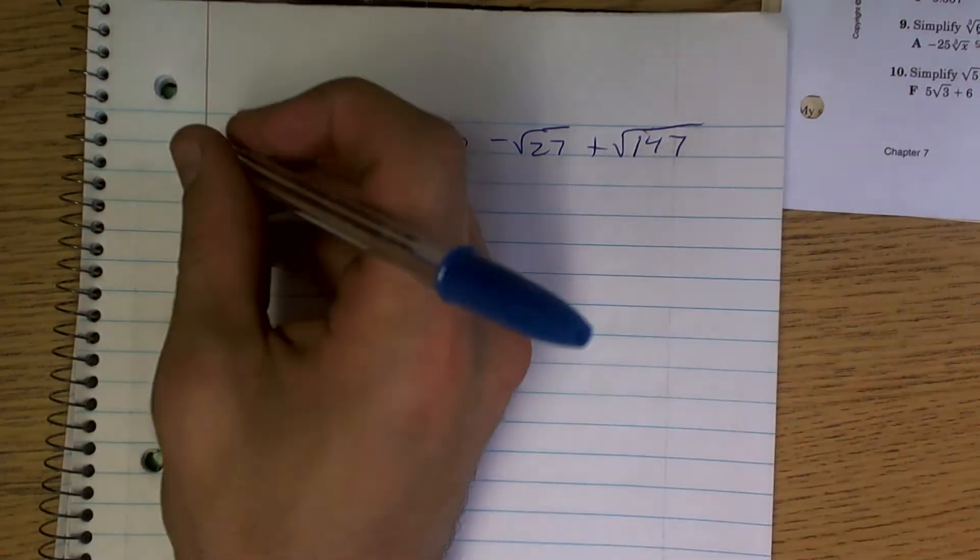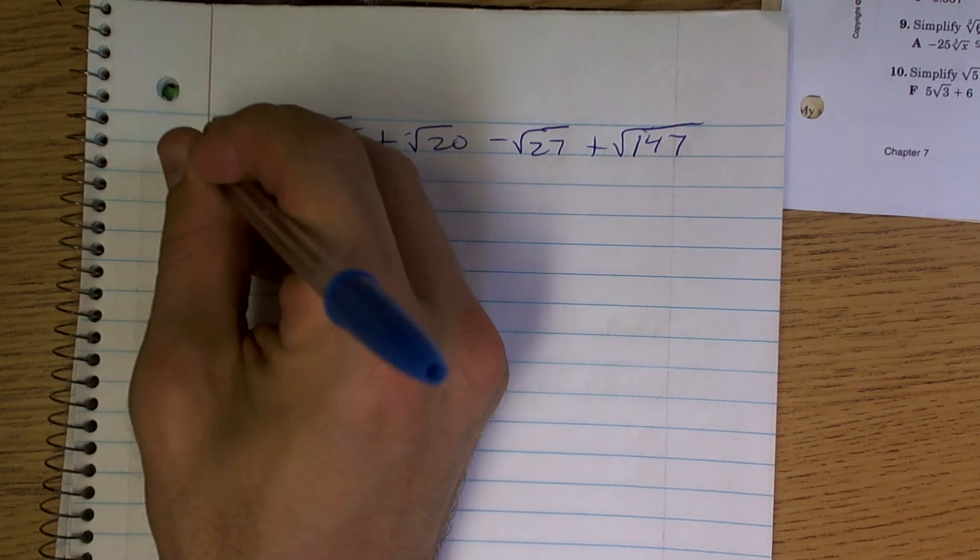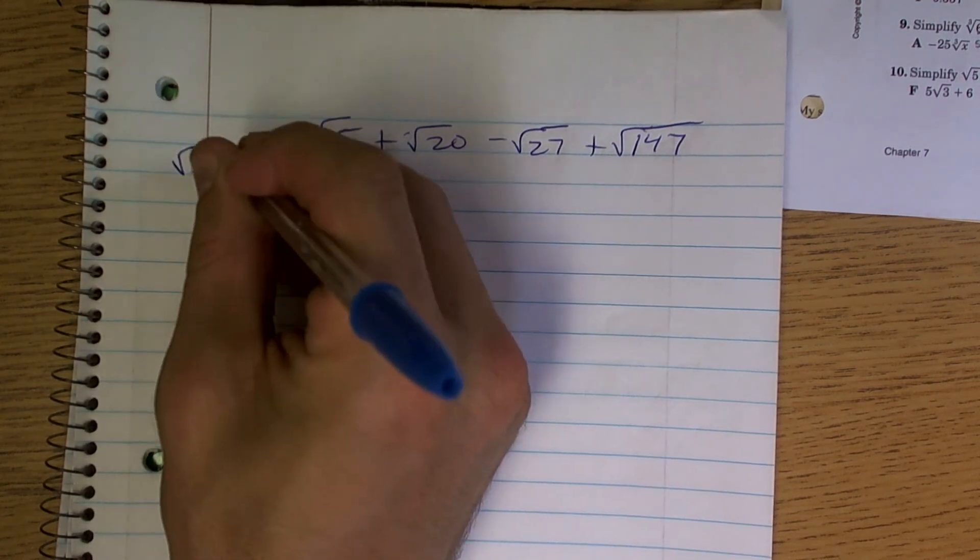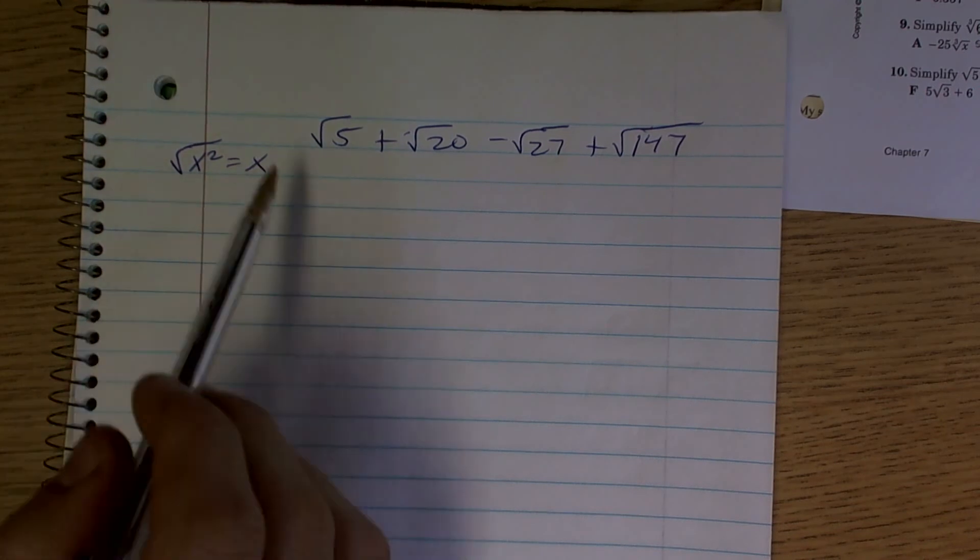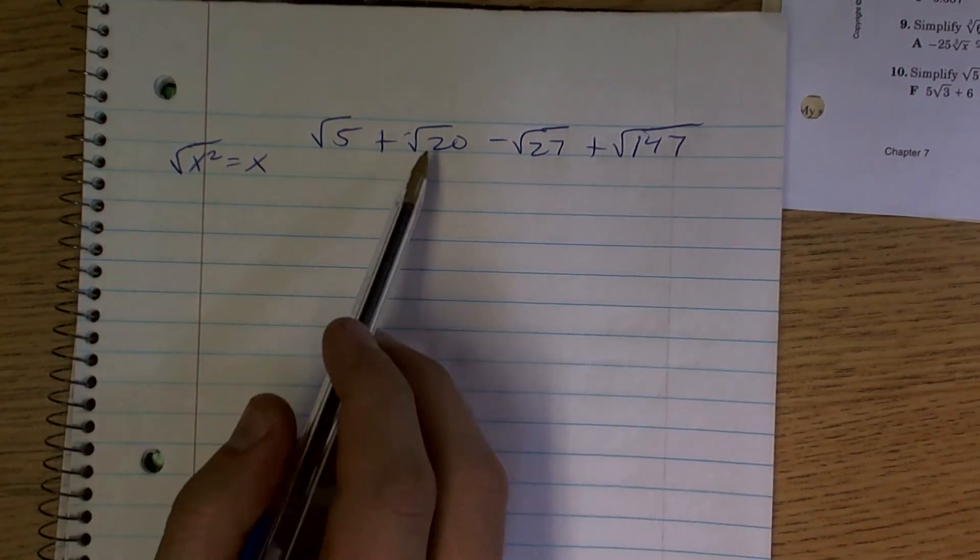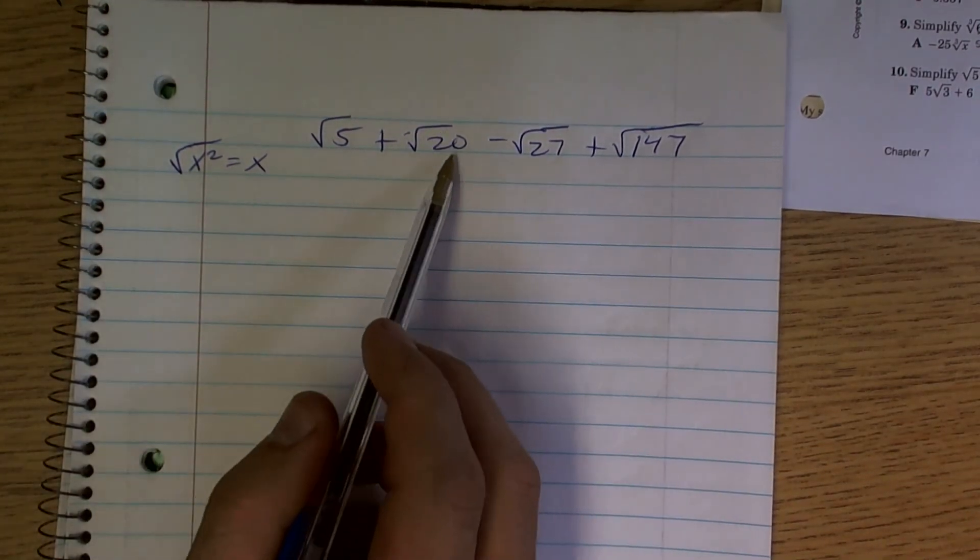You want to remember, the goal as far as simplifying a radical is that the square root of any number squared equals that number outside of the radical. So our goal is to write each one of these in terms of a square number that we can cancel out.